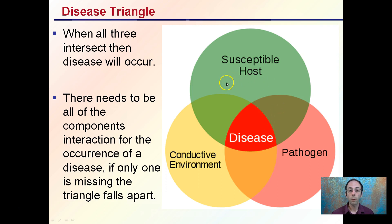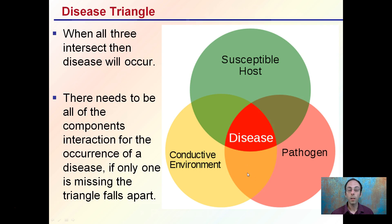In order to get disease, it's actually a combination of factors that are all coming together at the same time for that disease to occur. What those environmental conditions may be and what that pathogen is will be dependent on the form or type of disease that's present. But still, with the host, the environment, and the pathogen all coming together at the same time, that's where you get disease. And upsetting this triangle can be a great way to offer control and not allow disease to occur at a particular plant host.